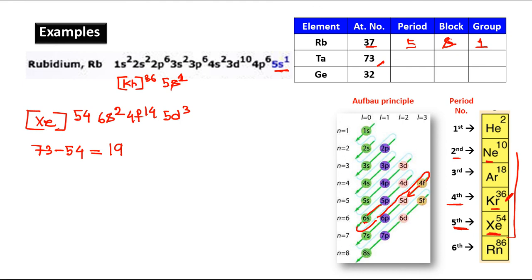For period: the principal quantum number of the valence shell is 6, so period = 6. Block: last electron enters d, so block = d. For d-block, add the electrons in the valence shell and the (n−1) shell. Here n = 6 and n−1 = 5, so add 6s² and 5d³: that is 2 + 3 = 5. So group = 5.